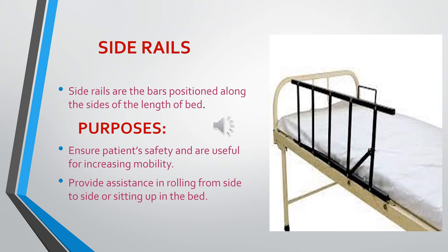Another comfort device is side rails. These are bars positioned along the sides of the bed. Their main purpose is to ensure patient safety and they are useful for increasing mobility. They also provide assistance in rolling from side to side or sitting up in bed. The primary purpose of side rails is to prevent the patient from falling out of bed. They can also be used as a support when the patient needs to move to a sitting position.